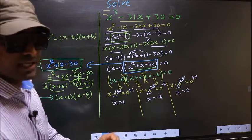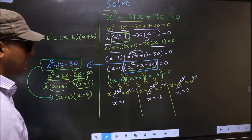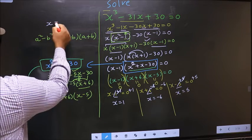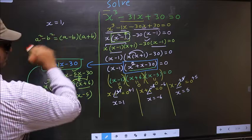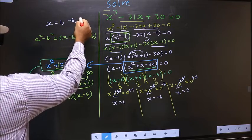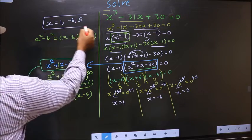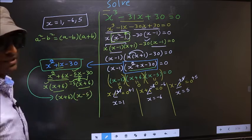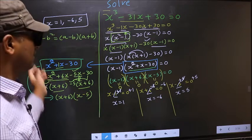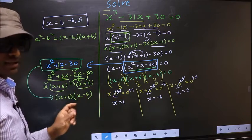So the x values that we got are 1, minus 6, and 5. This is our answer. Am I clear?